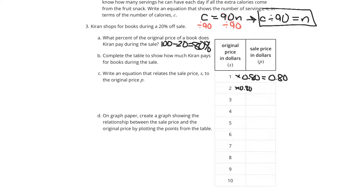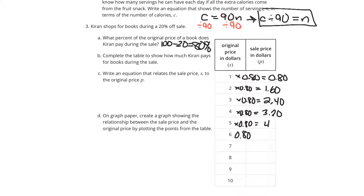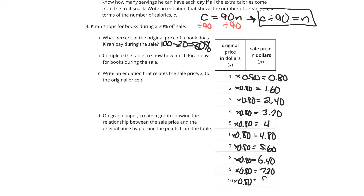Multiplying all original prices by 80%: $2 times 80% is $1.60; $3 times 80% is $2.40; $4 times 80% is $3.20; $5 times 80% is $4.00; $6 times 80% is $4.80; $7 times 80% is $5.60; $8 times 80% is $6.40; $9 times 80% is $7.20; and $10 times 80% is $8.00.